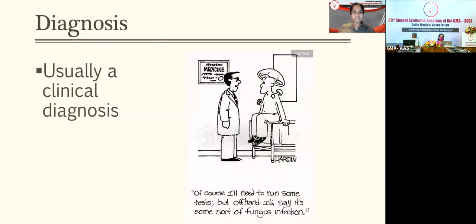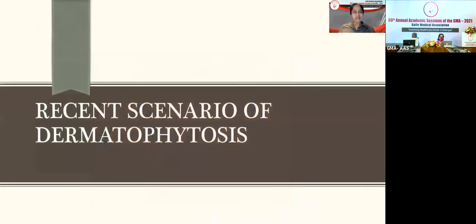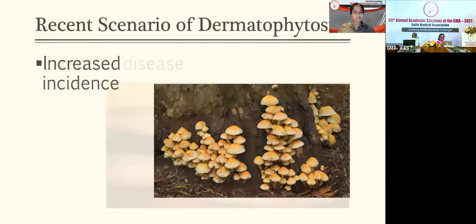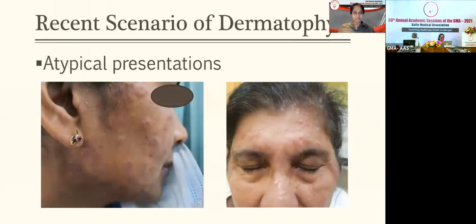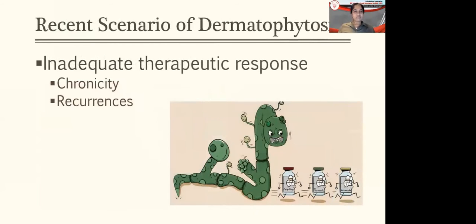Tinea manuum usually affects one hand with erythema, scaling, and dryness, and may be an extension of tinea pedis. Tinea capitis is commonly seen in children with patches of non-scarring alopecia, scaling of the underlying scalp, and possible enlargement of cervical lymph nodes. Tinea capitis (kerion) is caused by a zoophilic dermatophyte species and presents as an inflamed, boggy mass resembling an abscess. Early diagnosis is important because it can give rise to scarring alopecia; early intervention with oral antifungal agents is needed.